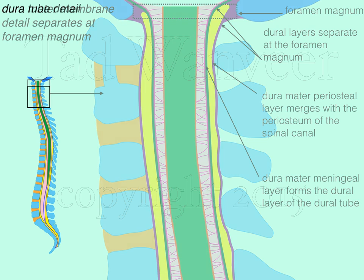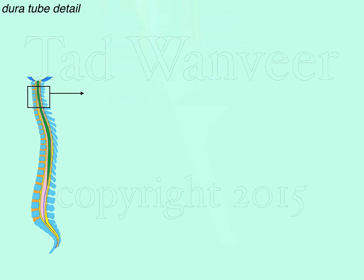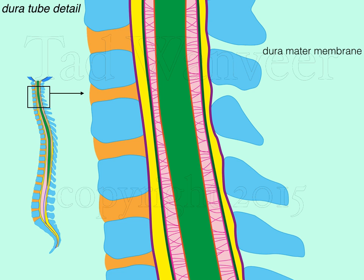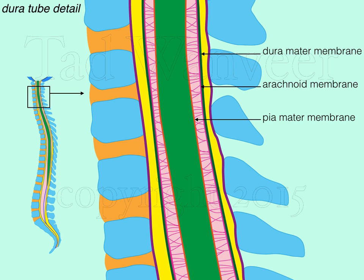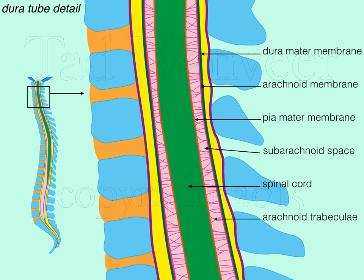In the next illustration, we'll look at a detail of the dural tube meningeal layers. The dura mater membrane is shown in green. The arachnoid membrane is adhered to the dura mater membrane. The pia mater membrane is attached to the spinal cord and shown as the red line. In between the arachnoid membrane and pia mater membrane is a space called the subarachnoid space. The spinal cord is shown in green. Spanning the distance between the arachnoid and pia mater membranes are small thread-like collagenous strands called arachnoid trabeculae.